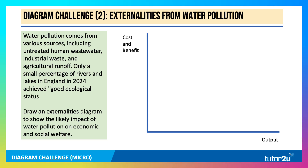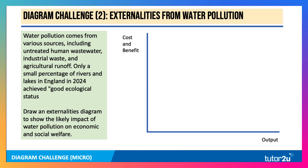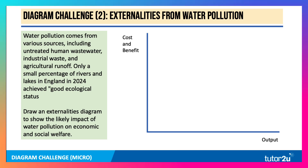Here's number two: externalities from water pollution. Water pollution comes from various sources including untreated human wastewater, industrial waste, and agricultural runoff. In 2024, only a small percentage of rivers and lakes in England achieved good ecological status. Draw an externalities diagram to show the likely impact of water pollution on economic and social welfare, focusing on pollution from industry and agricultural runoff.